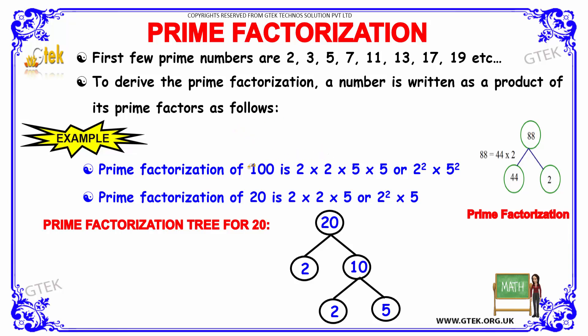The prime factors of 100 are 2 into 2 into 5 into 5. Multiplying these terms, you get 100. It is further simplified as 2 squared multiplied by 5 squared. Since the factors are prime numbers, this is known as Prime Factorization.